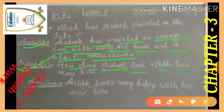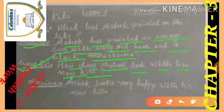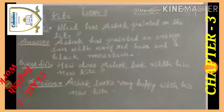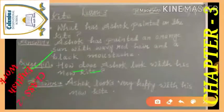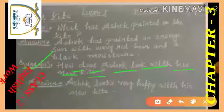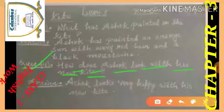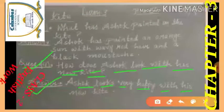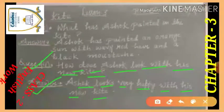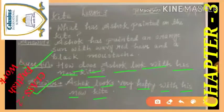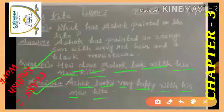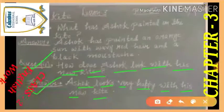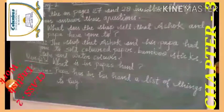How does Ashok look with his new kite? Ashok jo hain woh apne new kite ke saath — students, question number 4 is: how does Ashok look with his new kite? He looks very happy with his new kite. All question answers are now clear.